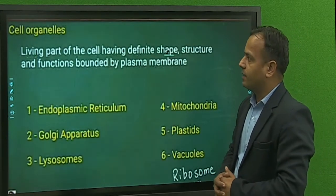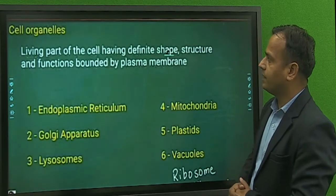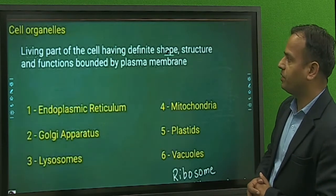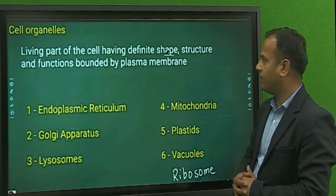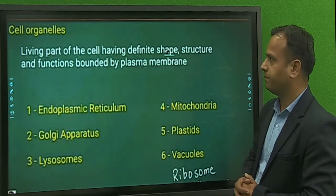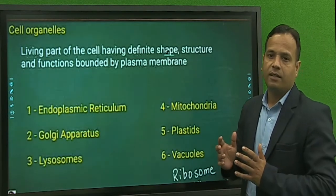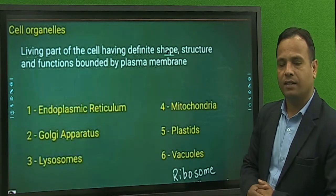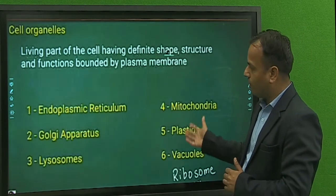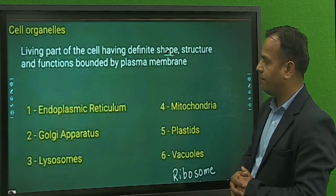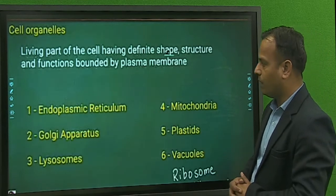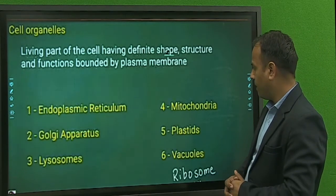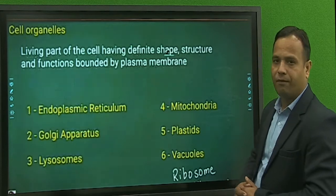Some topics are cell organelles. Cell organelles are living parts of the cell having definite structure and function, surrounded by the plasma membrane. Cell organelles are found in the cytoplasm. Some organelles are: Endoplasmic reticulum, Golgi apparatus, Lysosomes, Mitochondria, Plastid, and Vacuoles.